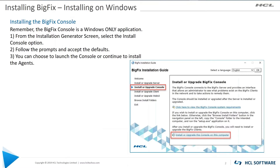We're continuing where we left off with the install generator. We had previously installed the server and the web reports, so now we're going to install the console. It's pretty simple — select it, accept the defaults, and you can choose to launch your console or continue to install agents.